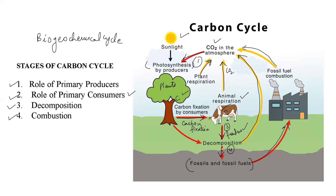Decomposition also leads to the release of carbon dioxide into the air. The carbon left in the dead matter gets converted into fossils and fossil fuels over a span of several years. When these fossils and fossil fuels are burned by combustion in stage four, carbon dioxide is released into the atmosphere. This is a cycle responsible for the circulation of carbon from one place to another.